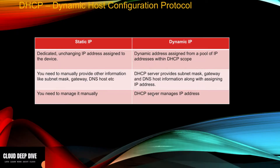First, let's talk about static IP and dynamic IP. Static IP is basically a dedicated, unchanging IP address that is assigned to a device, and you need to manually provide information like your subnet mask, gateway, DNS host, NetBIOS, etc. If you need to make any changes, you have to do it manually.